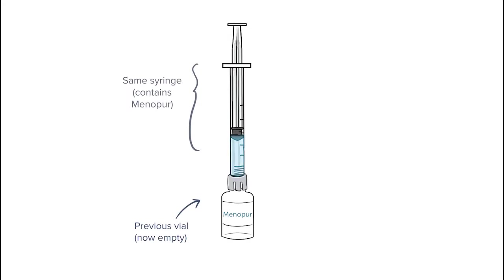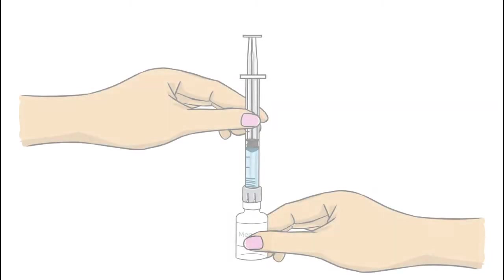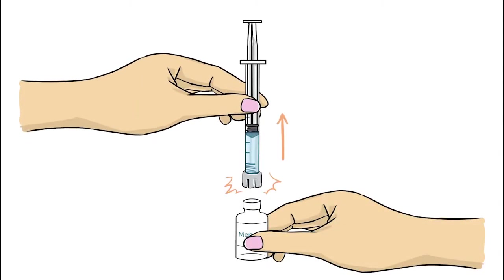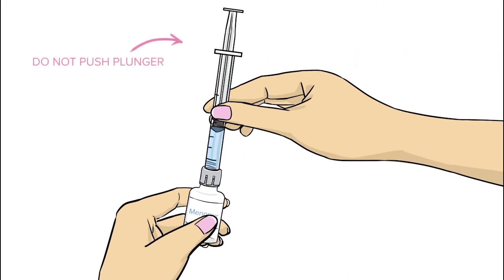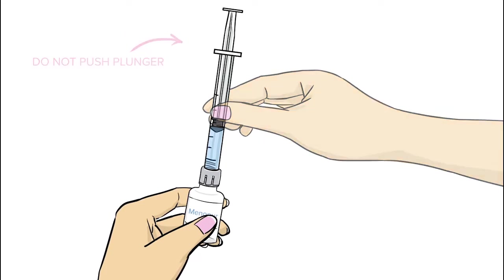You will now need the syringe containing reconstituted Menopur from your previous vial. Holding the sides of the syringe, separate it from the old vial by pulling up on the syringe barrel. Secure the Q-Cap on the new Menopur vial. Do not push down on the syringe plunger when securing the Q-Cap.